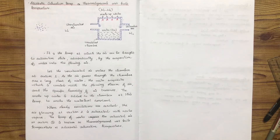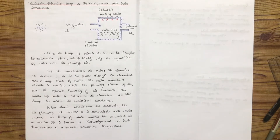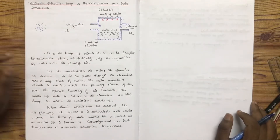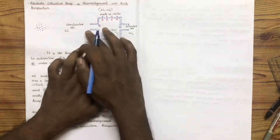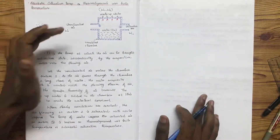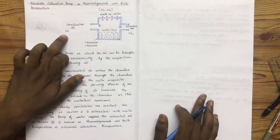How could you achieve the saturation process? How could you formulate saturated air? We use an insulated chamber with an inlet section and an outlet section. Unsaturated air enters, which has a specific humidity.